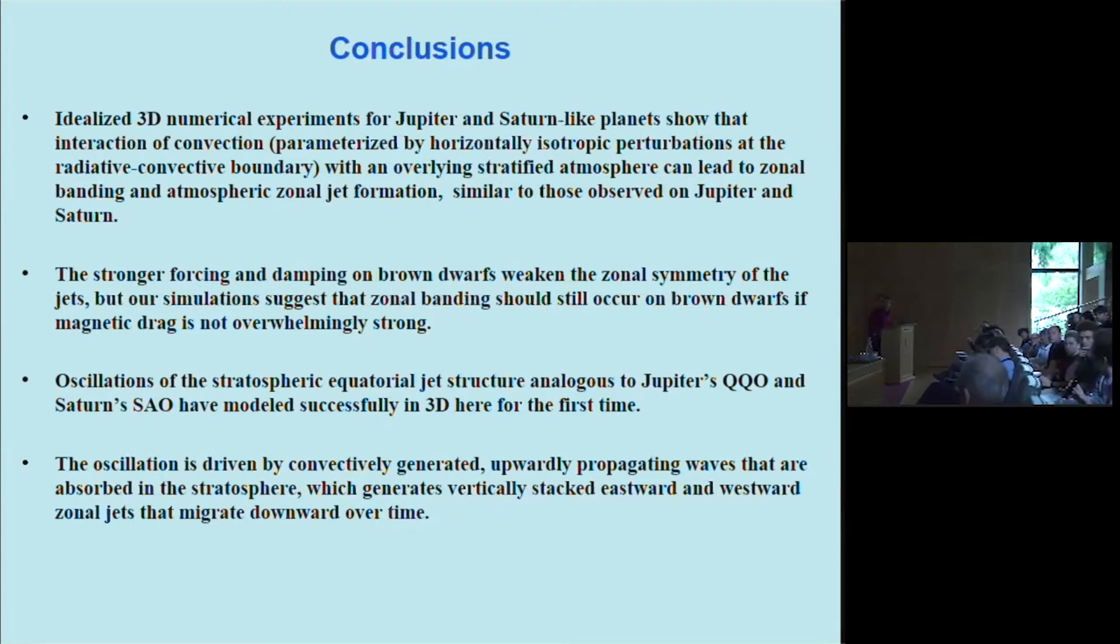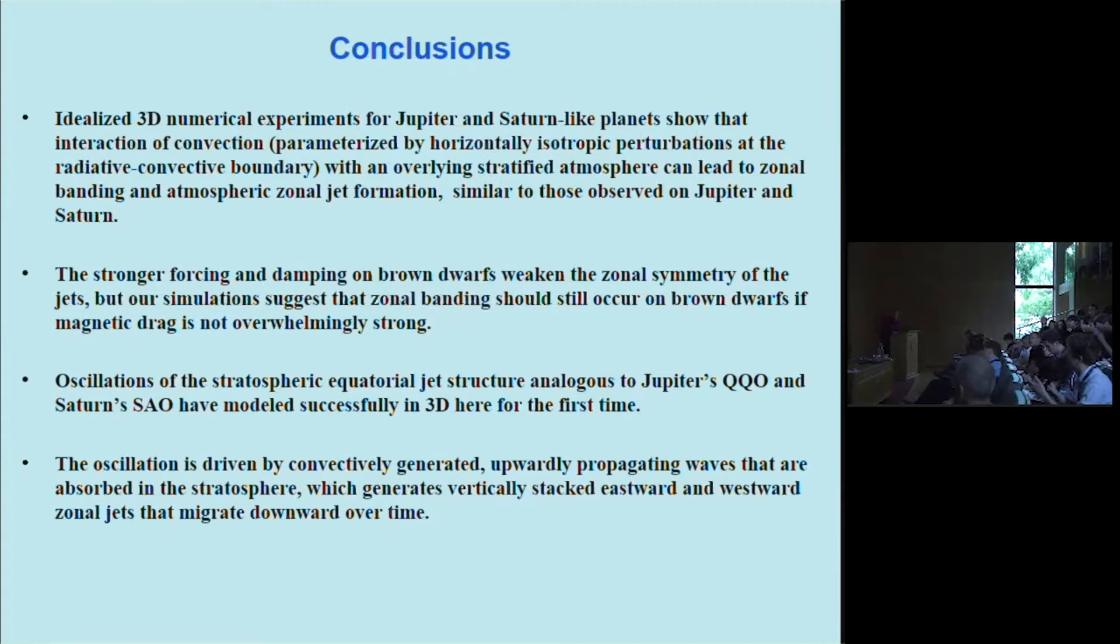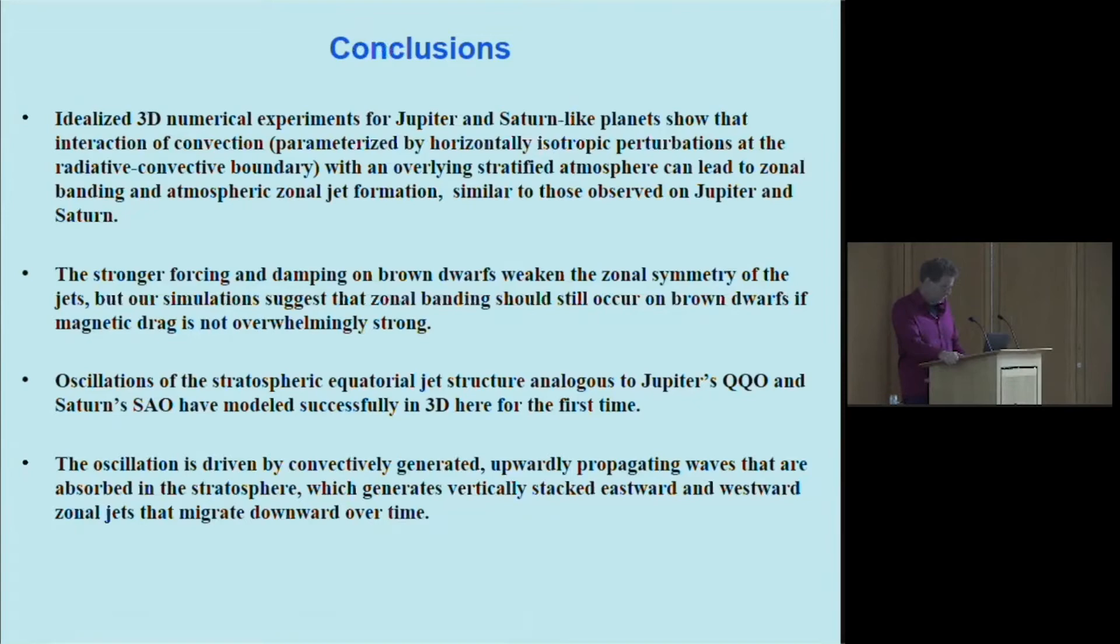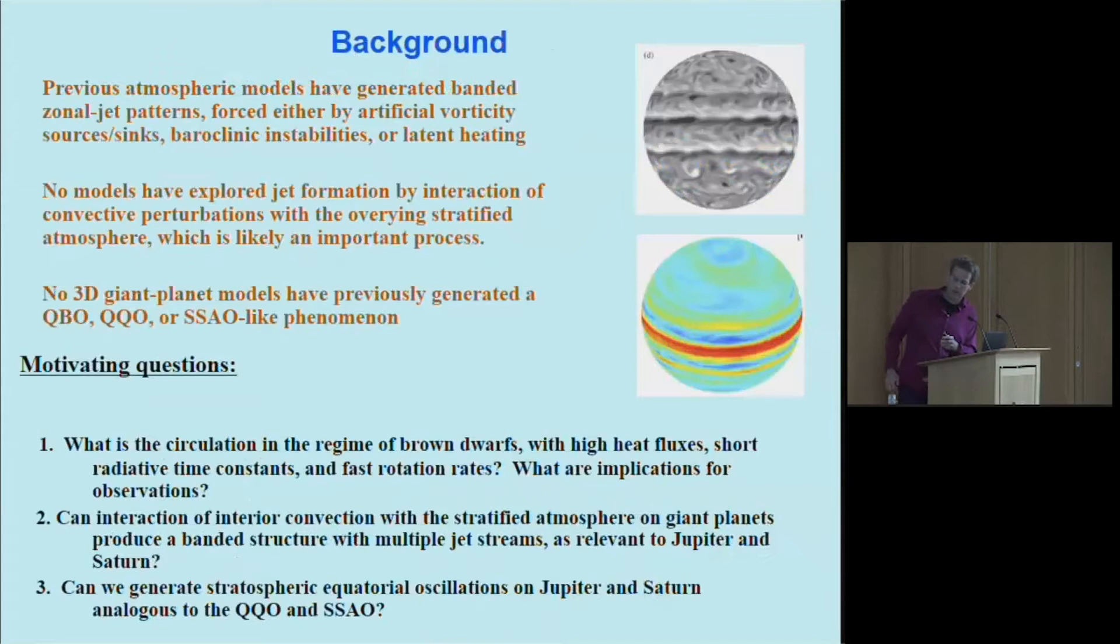Q: Presumably similar models have also produced convectively generated waves in the past. Why is this model different in that it's produced this mechanism? A: There's not been that much work done on Jupiter and Saturn for this type of thing. This shows a couple examples of prior work. This is an example of a shallow water calculation, which by its very definition is just a one-layer calculation that can't represent vertical wave propagation. There's only a handful—you could count them almost on one hand, certainly on two hands—of three-dimensional atmospheric calculations for Jupiter and Saturn, and those calculations generally don't include the stratosphere, or if they do, they don't represent this kind of wave forcing. I parameterized the bottom forcing.